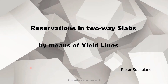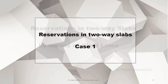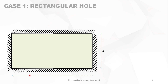This video deals with reservations in two-way slabs by means of yield lines. We will handle Case 1: a rectangular slab simply supported on four sides. It's a two-way slab, meaning dimension B is between A and 2A. If B is bigger than 2A, then we have a slab which only carries the load in the vertical direction.